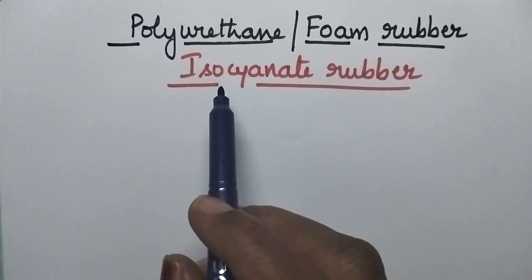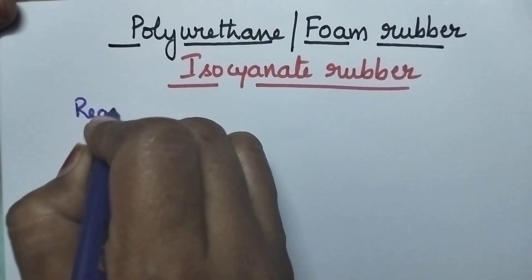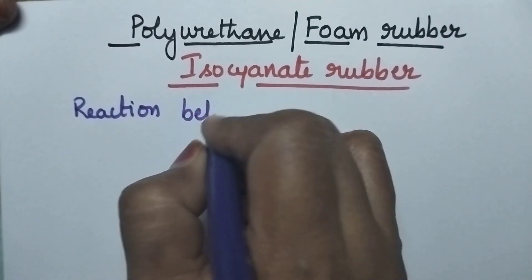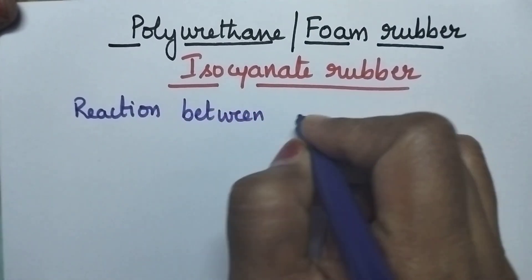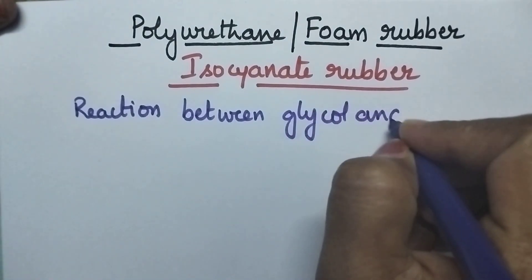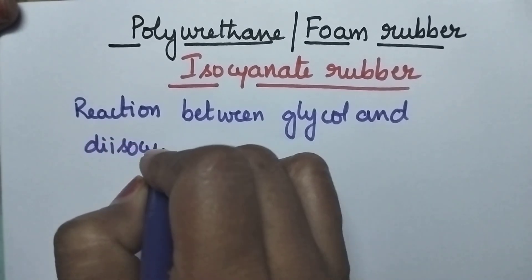So coming to the preparation of polyurethane, it can be prepared by the reaction between glycol and diisocyanate.